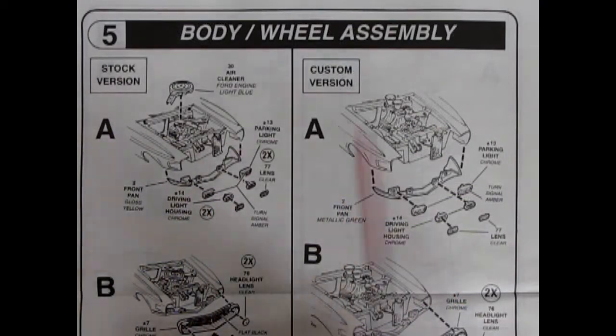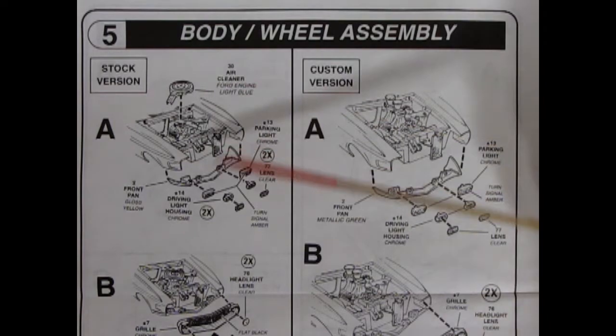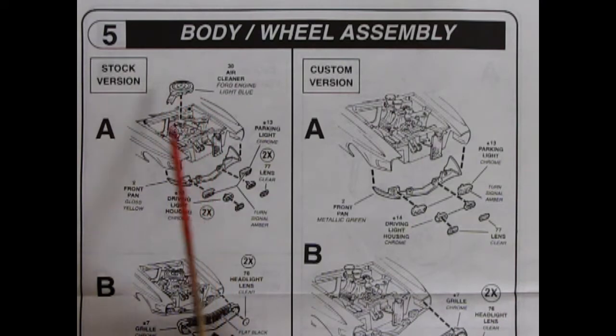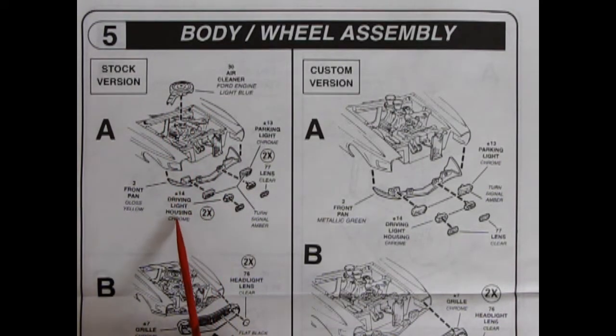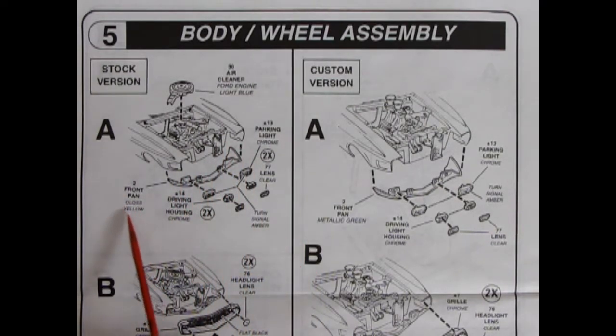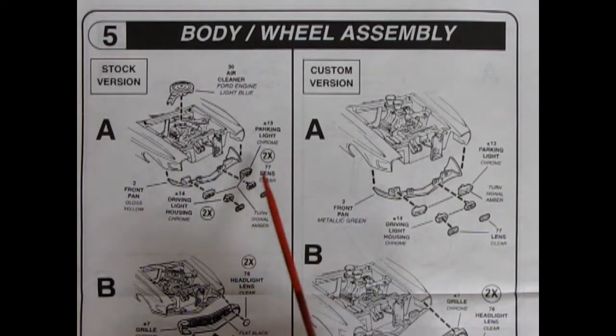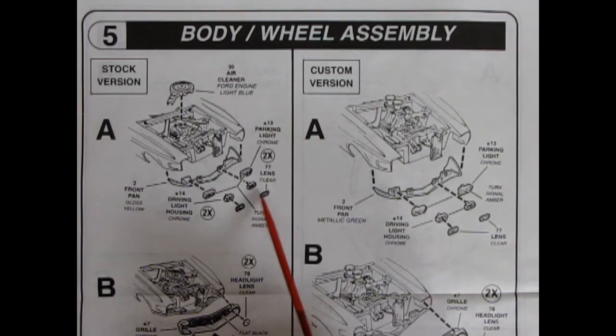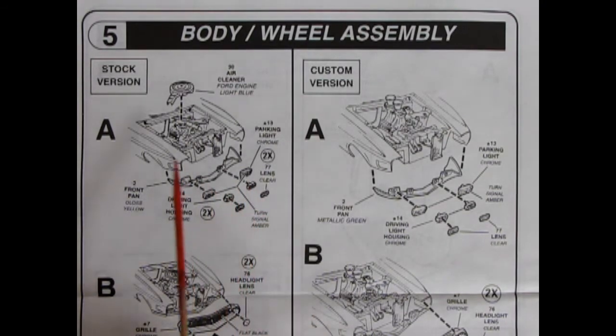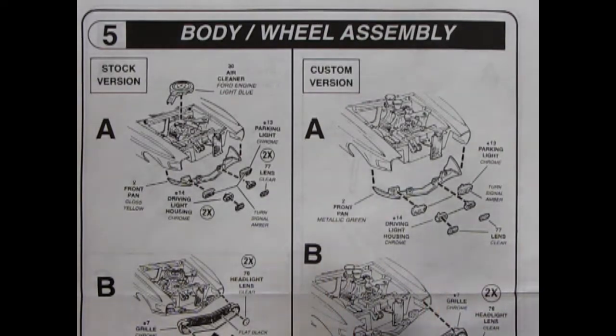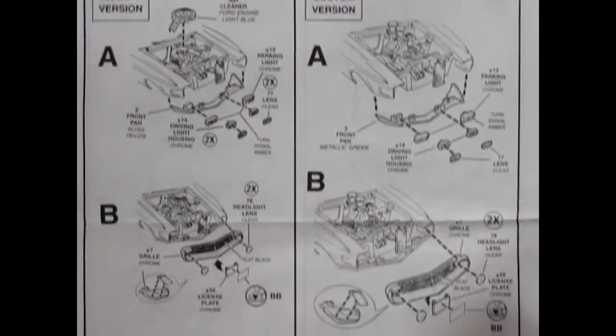Body and wheel assembly, step five. You've got the stock version coming down this side and the custom on this side. Here it shows our air cleaner going on the top. And then we've got our front pan gluing up underneath. And they call out gloss yellow, which is interesting. That was the original. The parking lights are going on. And then we've got these driving lights with little turn signal lenses in here, which are clear. And all this goes into the front. On the custom version, same thing, except we're not putting in that stock air cleaner. They're calling this out metallic green on your pan.